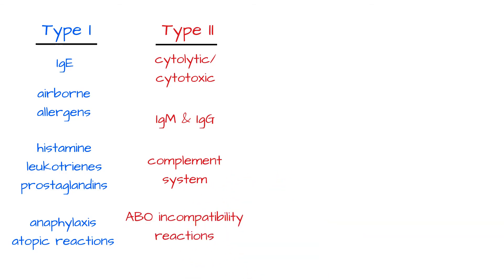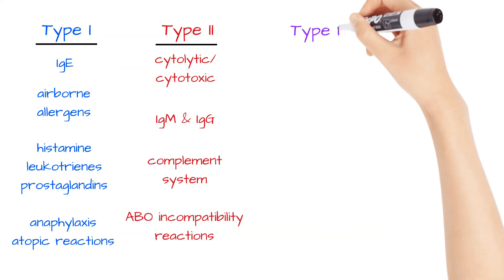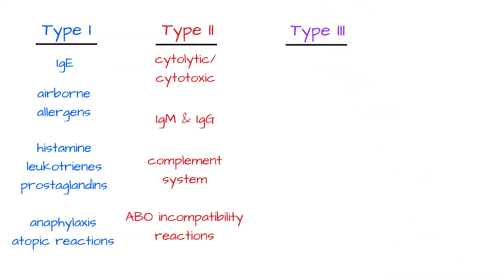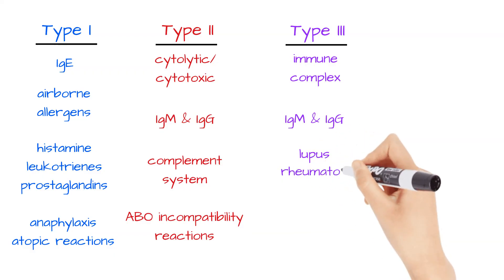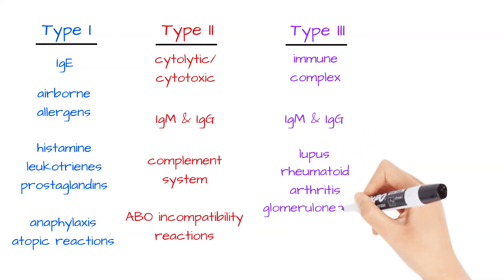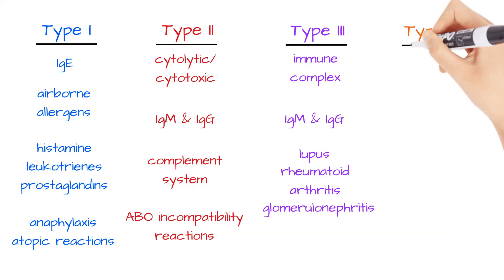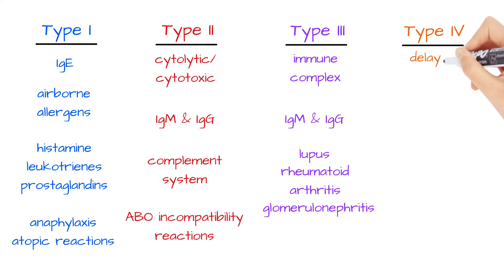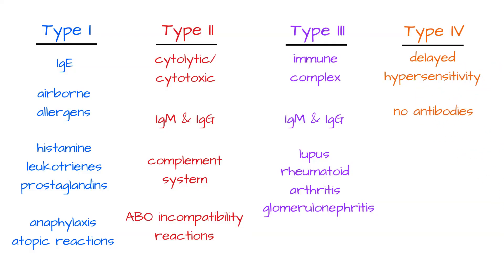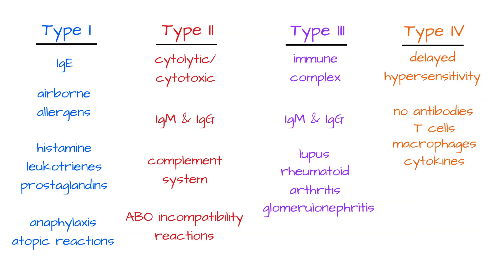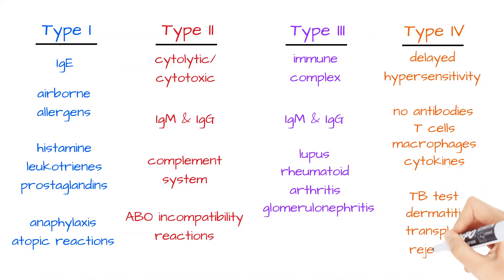Type 3 is mediated by antigen-antibody immune complexes. IgM and IgG are also involved here. Examples include lupus, rheumatoid arthritis, and glomerulonephritis. Type 4 is a delayed hypersensitivity response with no antibodies involved. Instead, it has T cells, macrophages, and cytokines as the main components. Examples include TB skin testing, contact dermatitis, and transplant rejections.